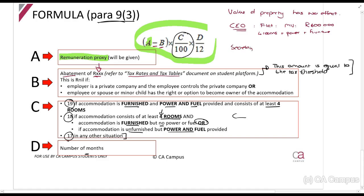And then there's a secretary. The secretary, you give a castle with a market value of R20 million. I know this is obviously silly, but I want you to understand. Let's say this one has 100 rooms plus power and furniture.